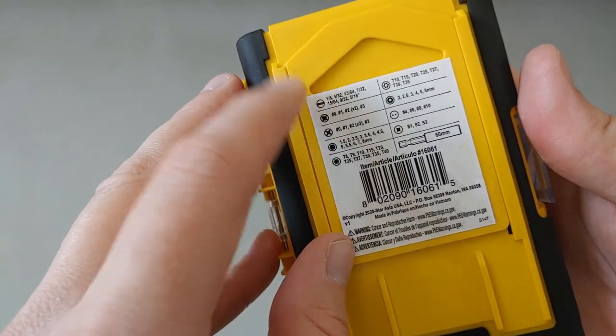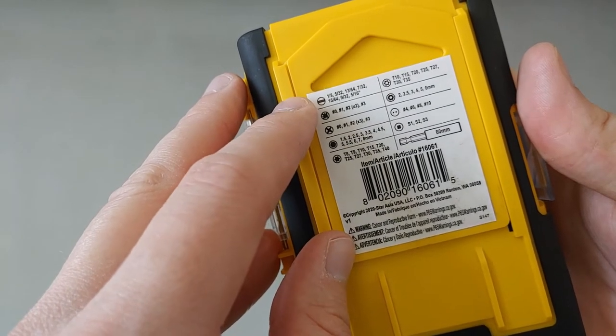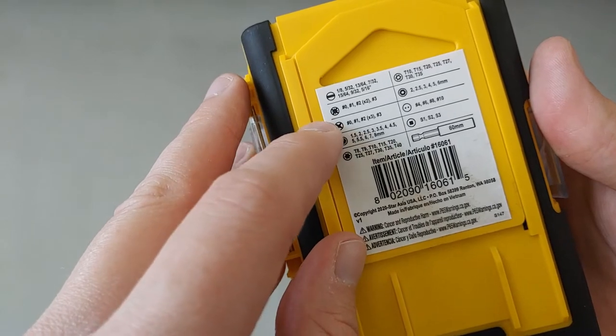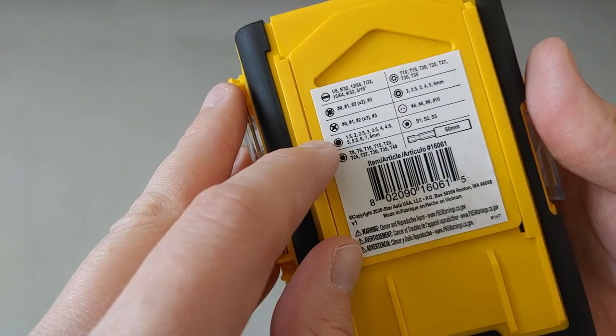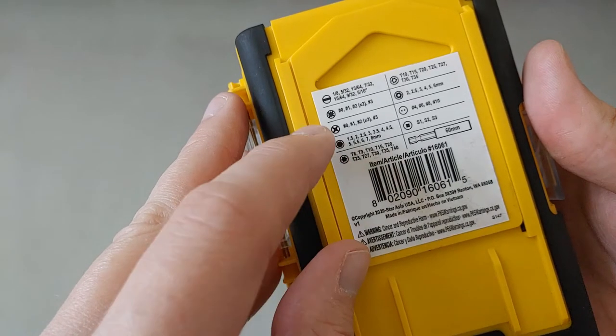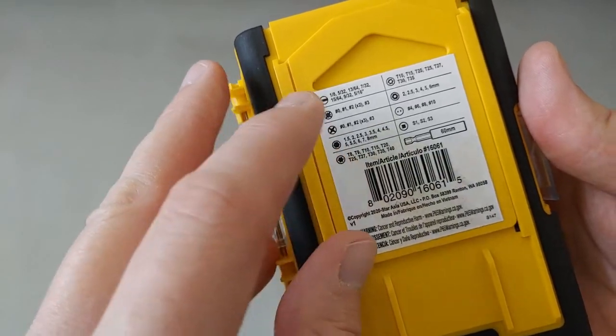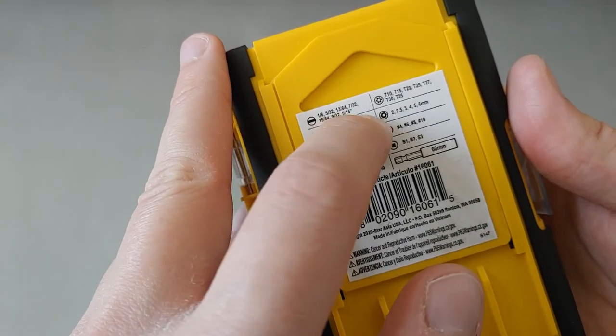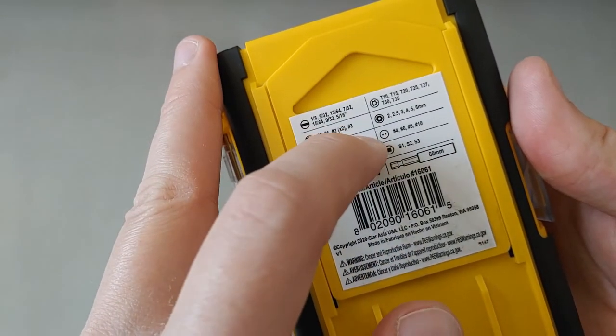It comes with slotted bits in SAE or Imperial, posi drive, Philips, hex (normal hex), torx (normal torx), security torx, and security hex.